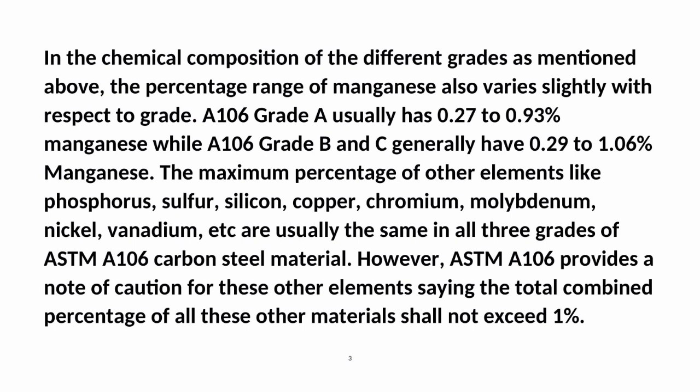In the chemical composition of the different grades, the percentage range of manganese also varies slightly. A-106 Grade A usually has 0.27 to 0.93% manganese, while A-106 Grade B and C generally have 0.29 to 1.06% manganese. The maximum percentage of other elements like phosphorus, sulfur, silicon, copper, chromium, molybdenum, nickel, vanadium, etc., are usually the same in all three grades of ASTM A-106 carbon steel material.